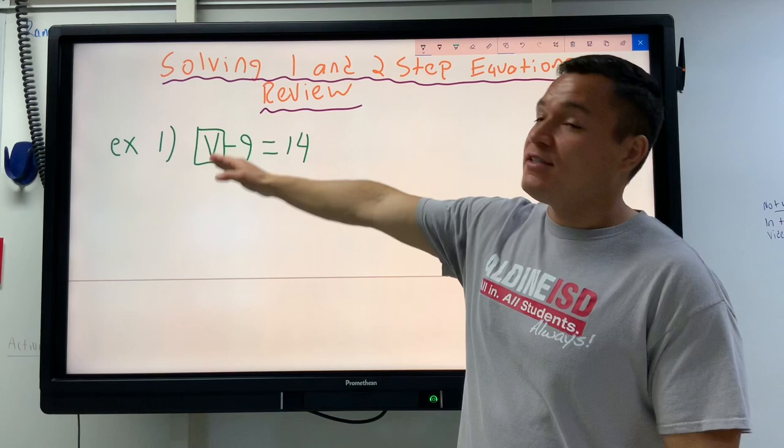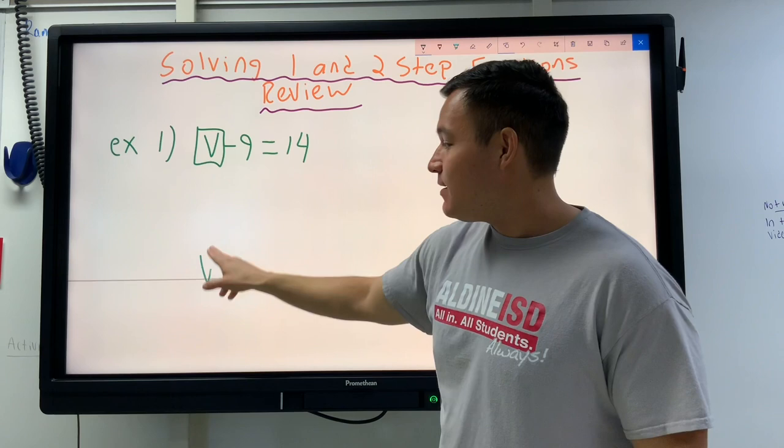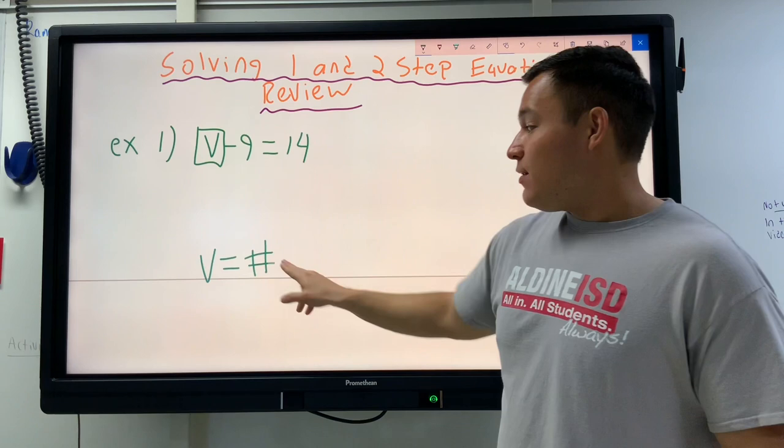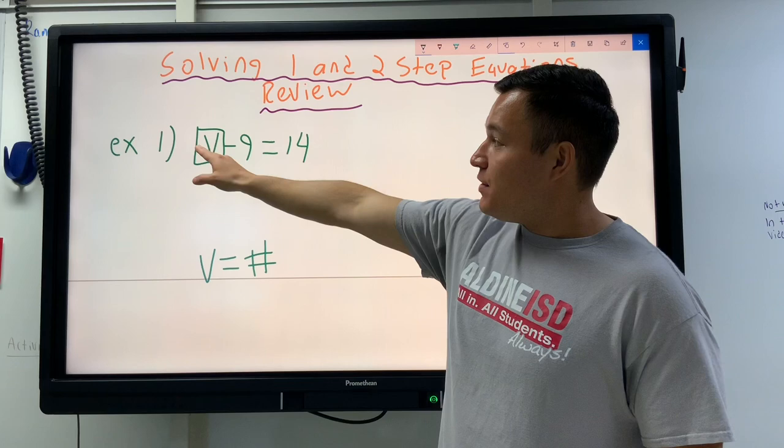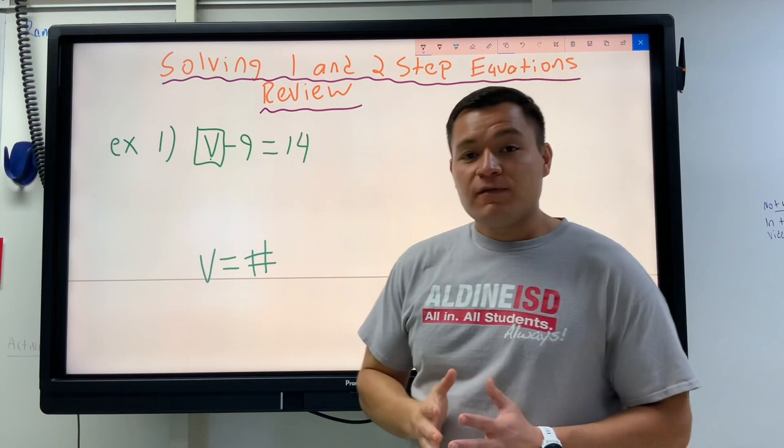If this thing is solved for, then that means in the end, I should have something where it's V equal to a number. Our goal of solving an equation is to find out what needs to go here so that if I subtract nine, I get the answer of 14. And how we solve for that letter is we use inverse operations.